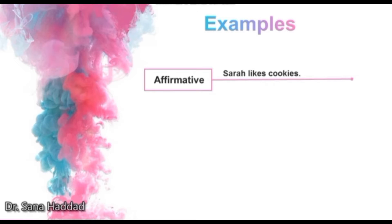Here's an example of an affirmative sentence. Sarah likes cookies. Here's an example of a negative sentence. Danny doesn't sleep early. These are both declarative sentences because they both give information. One is affirmative and the other is negative.